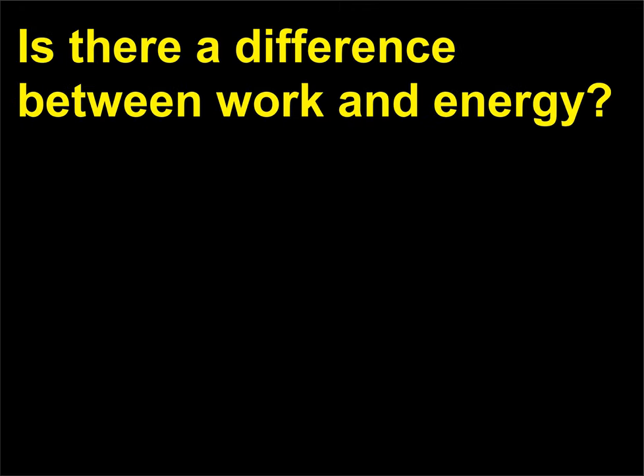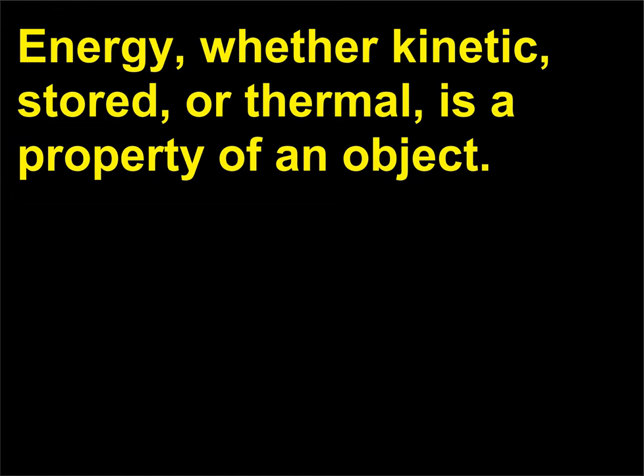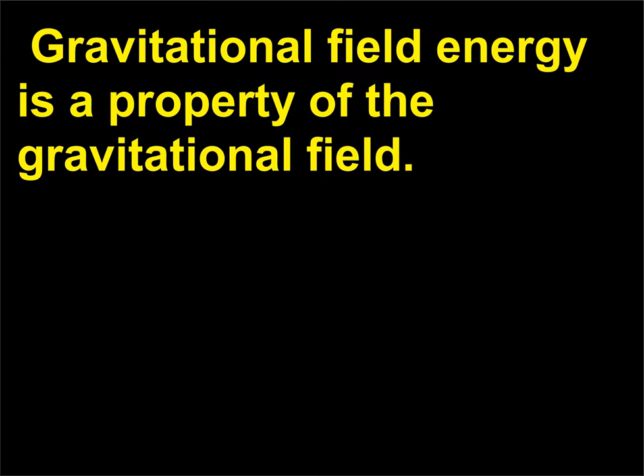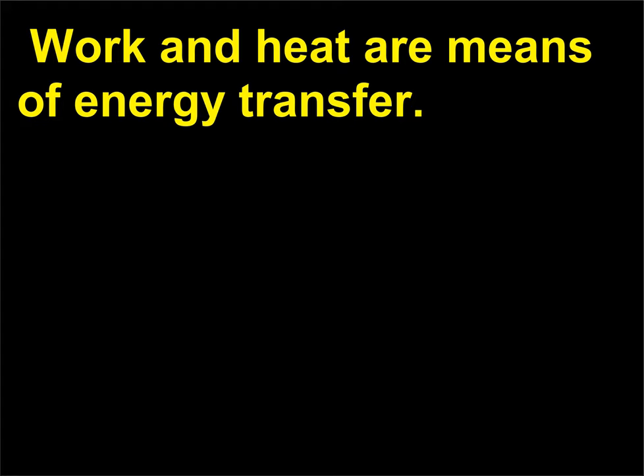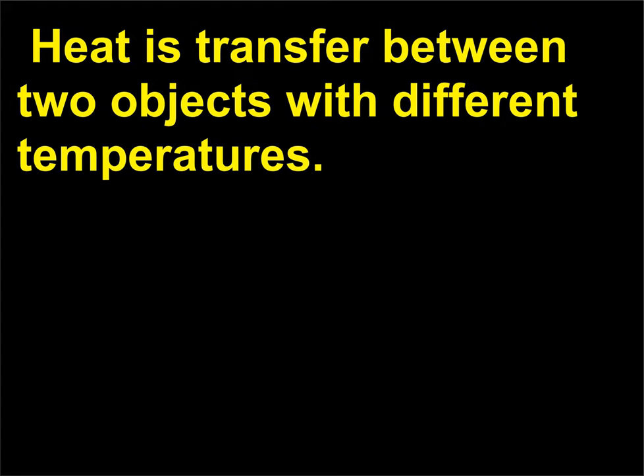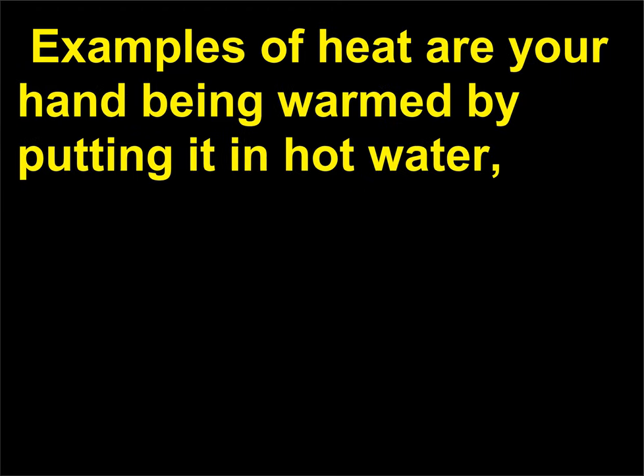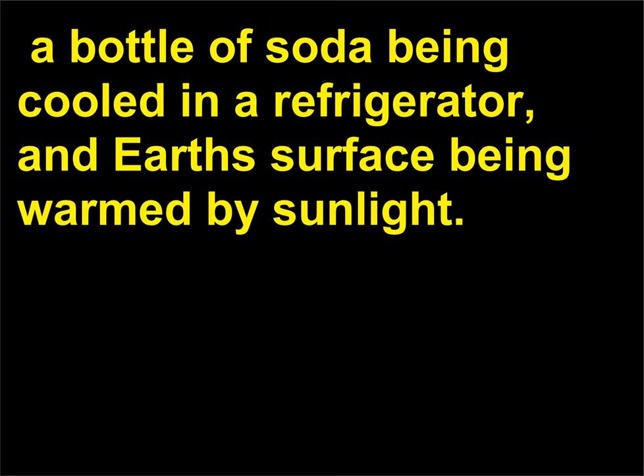Is there a difference between work and energy, between heat and thermal energy? Energy, whether kinetic, stored, or thermal, is a property of an object. Gravitational field energy is a property of the gravitational field. Work and heat are means of energy transfer. Work is transfer by mechanical means. Heat is transfer between two objects with different temperatures. Examples of work are you throwing a ball, a slingshot launching a stone, a ball being caught in a mitt. Examples of heat are your hand being warmed by putting it in hot water, a bottle of soda being cooled in a refrigerator, and earth's surface being warmed by sunlight.